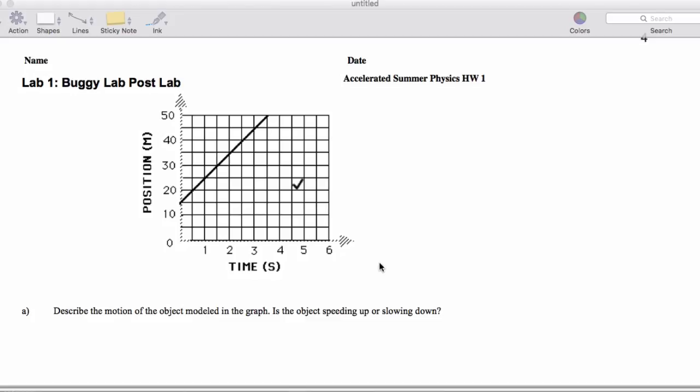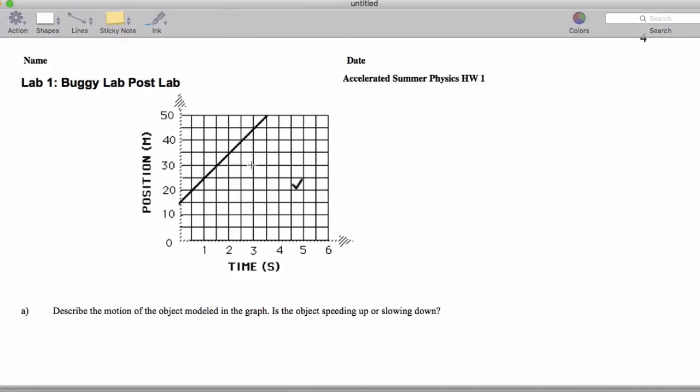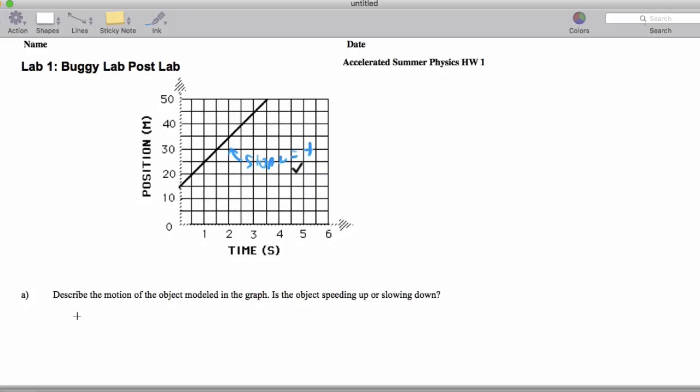So when we say describe the motion, let's be clear. We see that the object is moving, and when we plot its position, we've got a positive slope. And so what we'll say is that it is moving forward. That's what positive slope means. And since the slope is a steady slope, it's moving forward at a constant velocity.